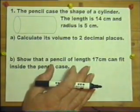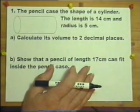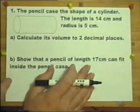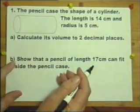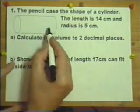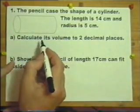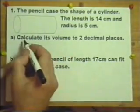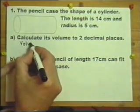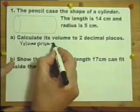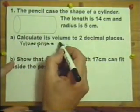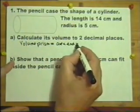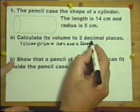I've got a pencil case in the shape of a cylinder. The length of this pencil case is 14cm. The radius is 5cm. Calculate the volume. Right, now this in fact is a prism. Any solid where the end is the same shape all the way through is called a prism. And the volume of any prism, no matter what the shape of the end is, as long as it has the same cross section all the way through, the volume of any prism is the area of the end multiplied by the length of the prism.